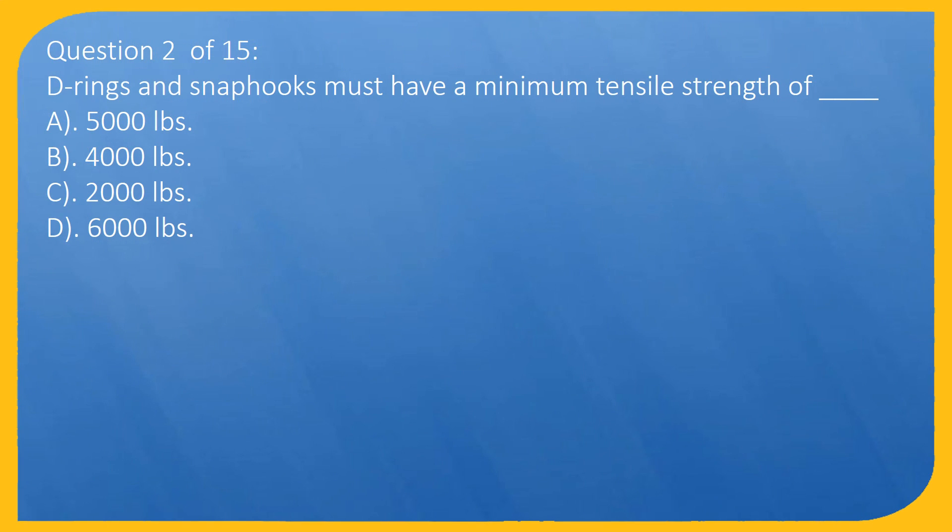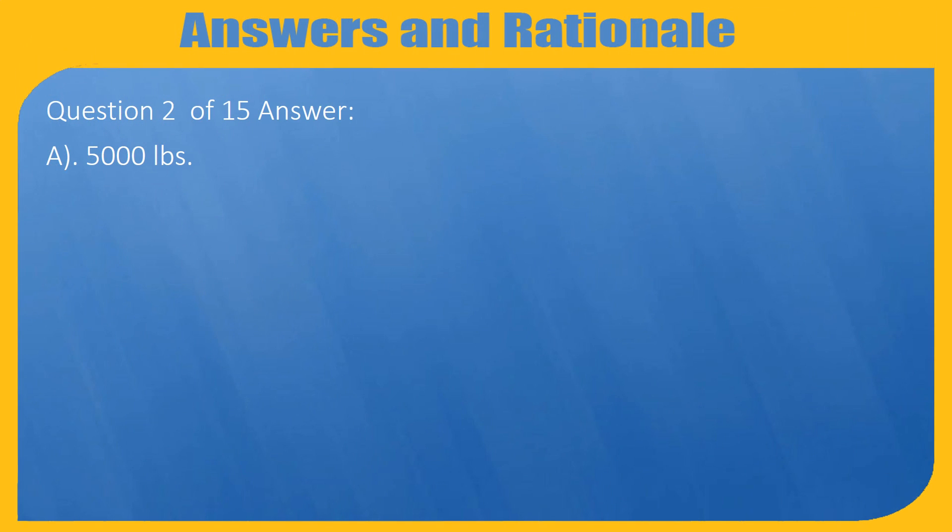Question 2 of 15: D-rings and snaphooks must have a minimum tensile strength of: A) 5,000 pounds, B) 4,000 pounds, C) 2,000 pounds, D) 6,000 pounds. Answer: A, 5,000 pounds.